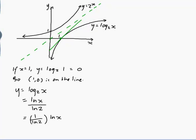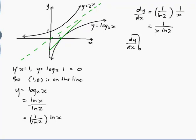So that means that dy/dx would be equal to 1 over ln 2 times the derivative of ln x which is 1 over x. So dy/dx when x equals 1 is equal to 1 over 1 times ln 2. So that's the slope of my line.